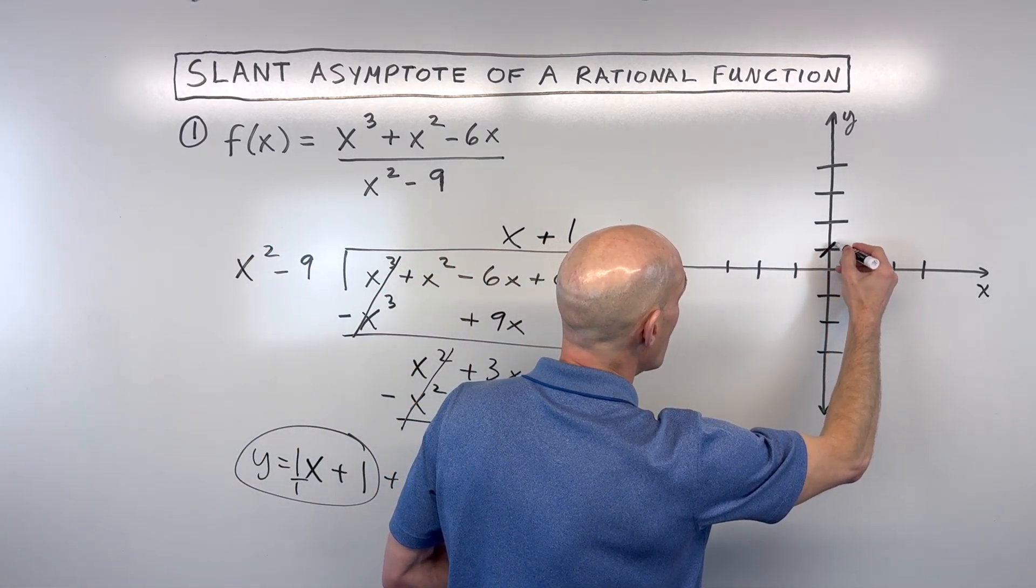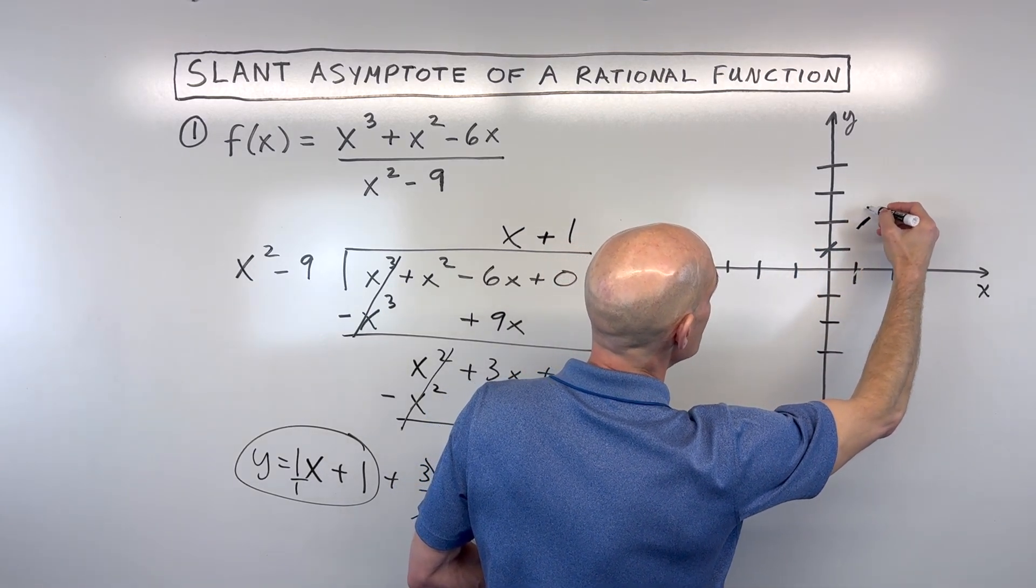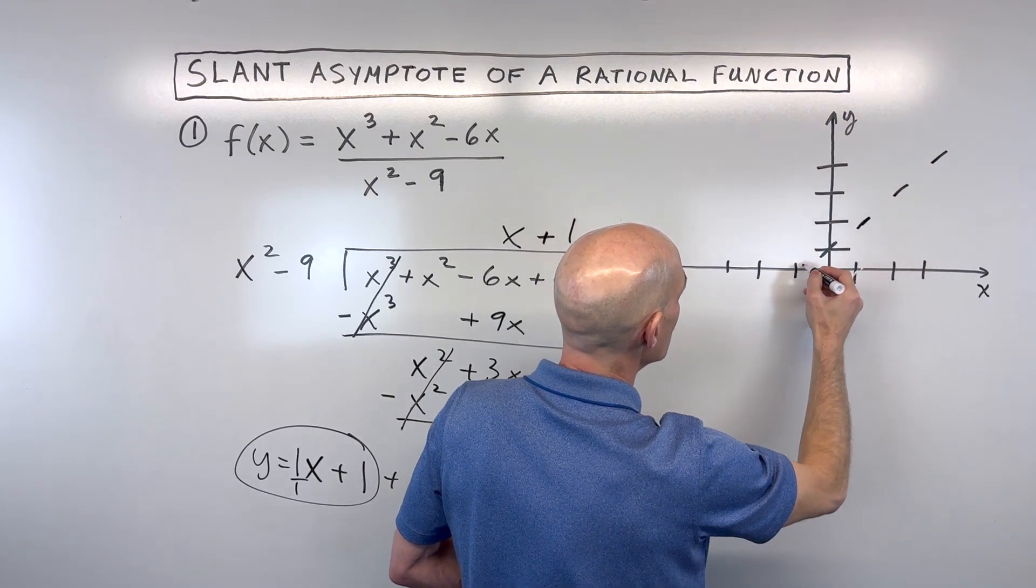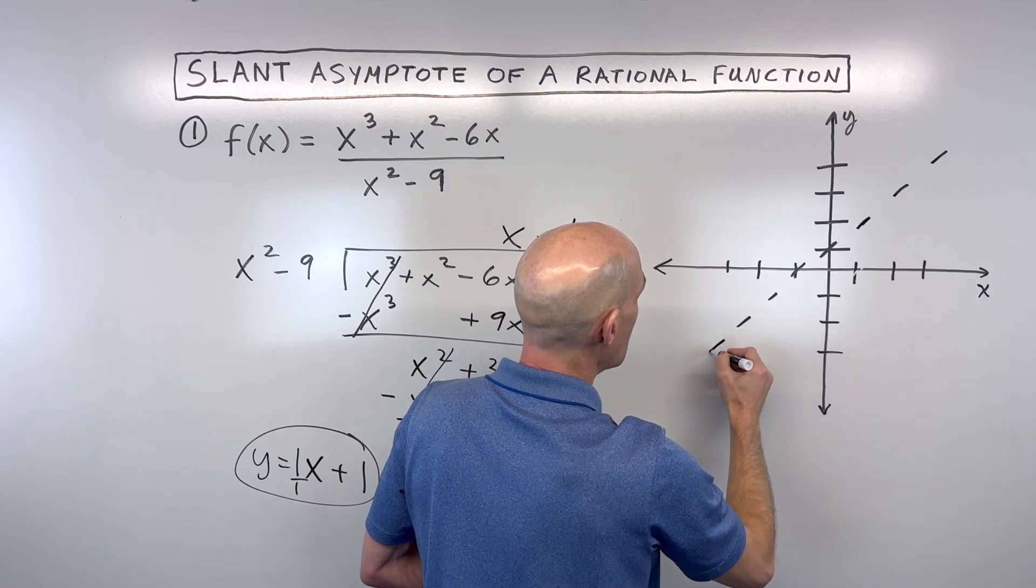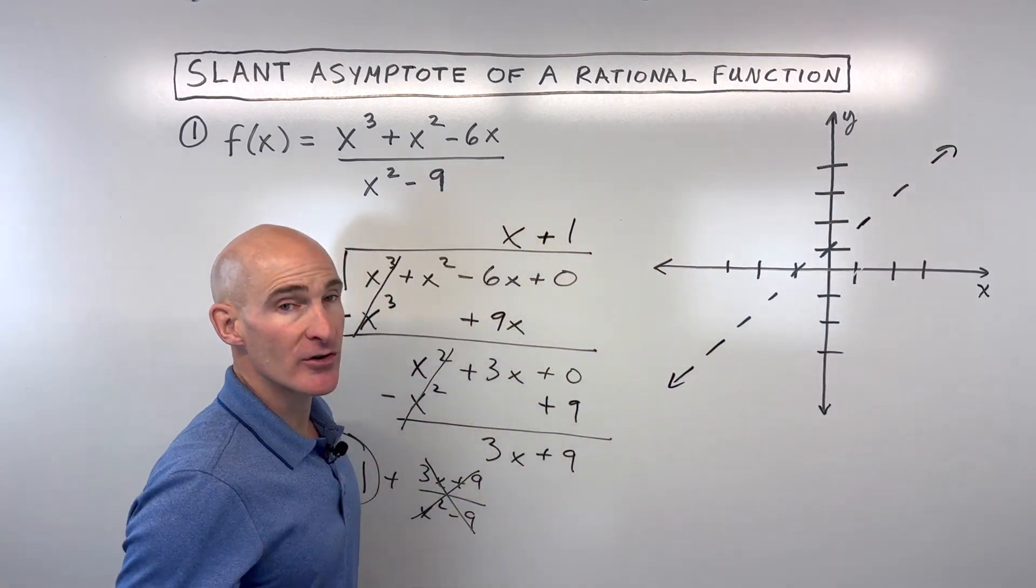So see how I'm just kind of rise 1, run 1? I'm just following that slope there of 1. And I'm not putting any points. I'm just using a dash or a dotted line. So that's going to be your slant asymptote.